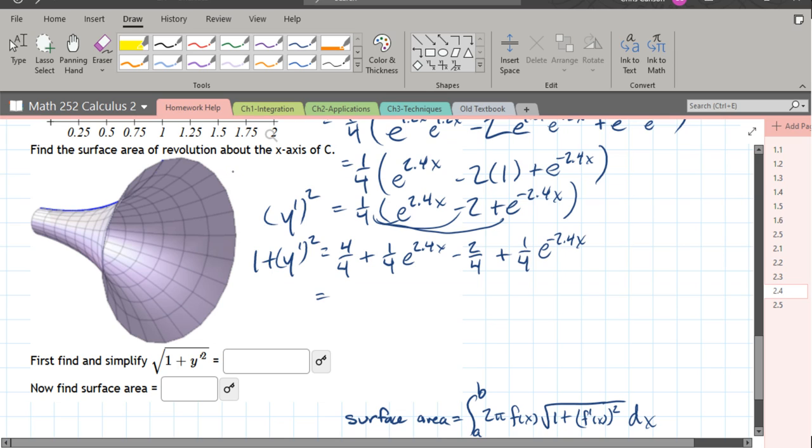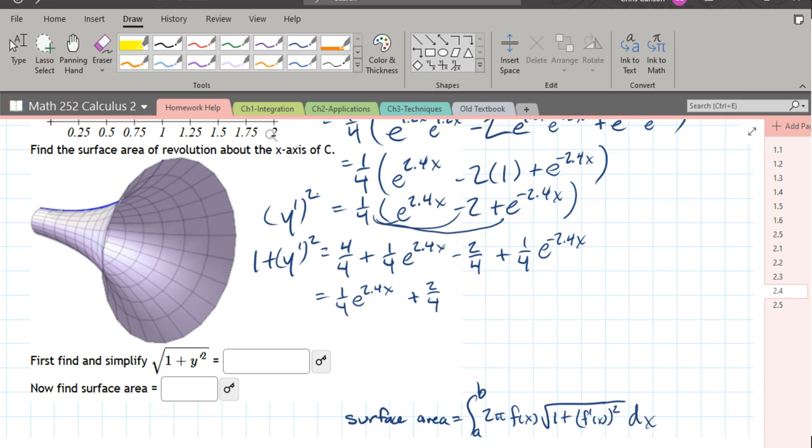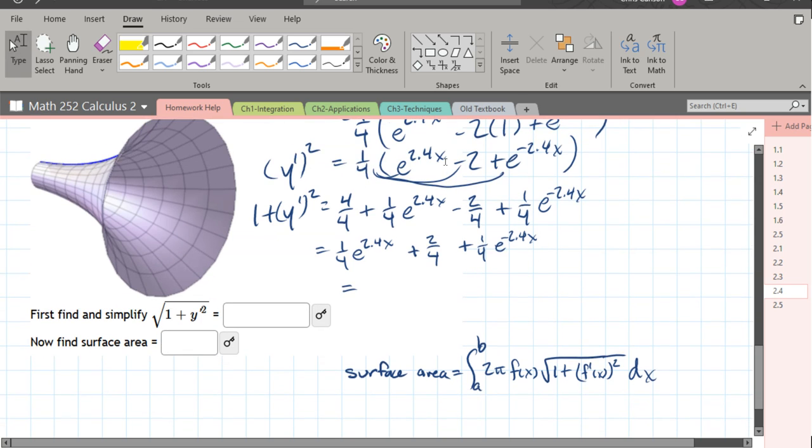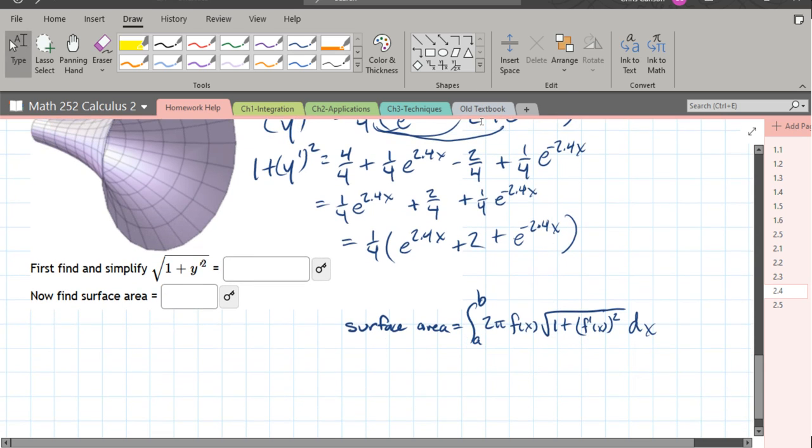We'll go 1 fourth e 2.4x. Now my constants. I have 4 fourths minus 2 fourths is plus 2 fourths. You might be screaming, hey, reduce to a half, please. Just relax. You have to think about where we're going. And at the very end, I'm going to factor out a fourth. And then everything will be fine. 1 fourth factored out. e 2.4x plus 2 plus e negative 2.4x. And we're finally ready. This is 1 plus y prime squared.